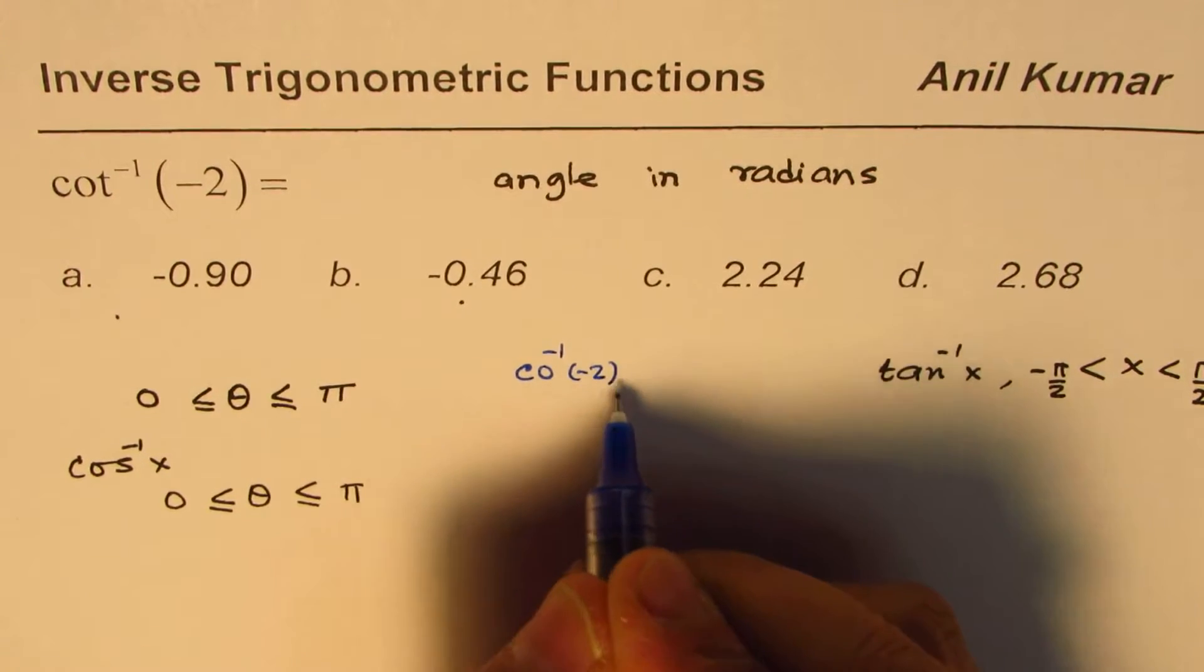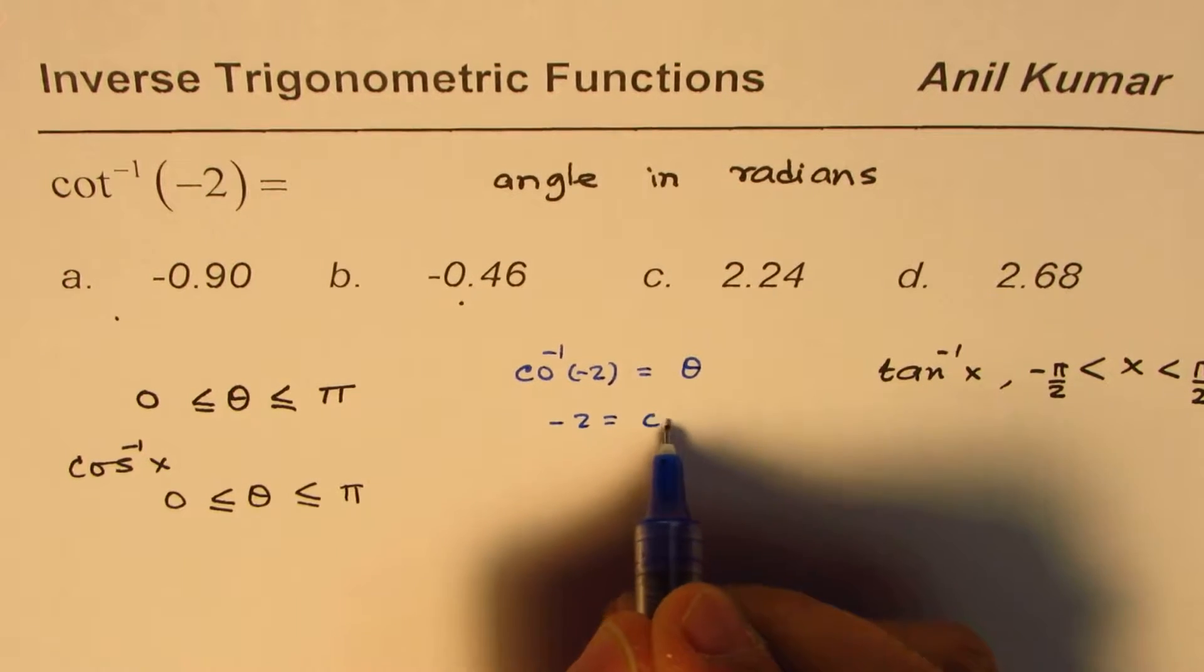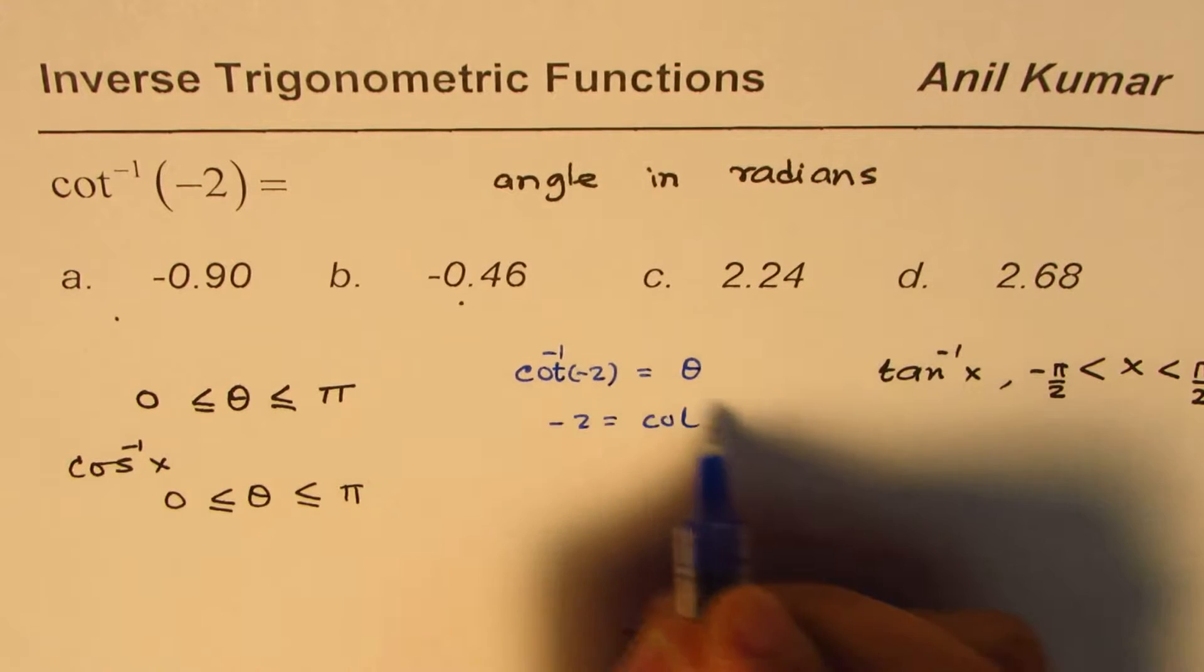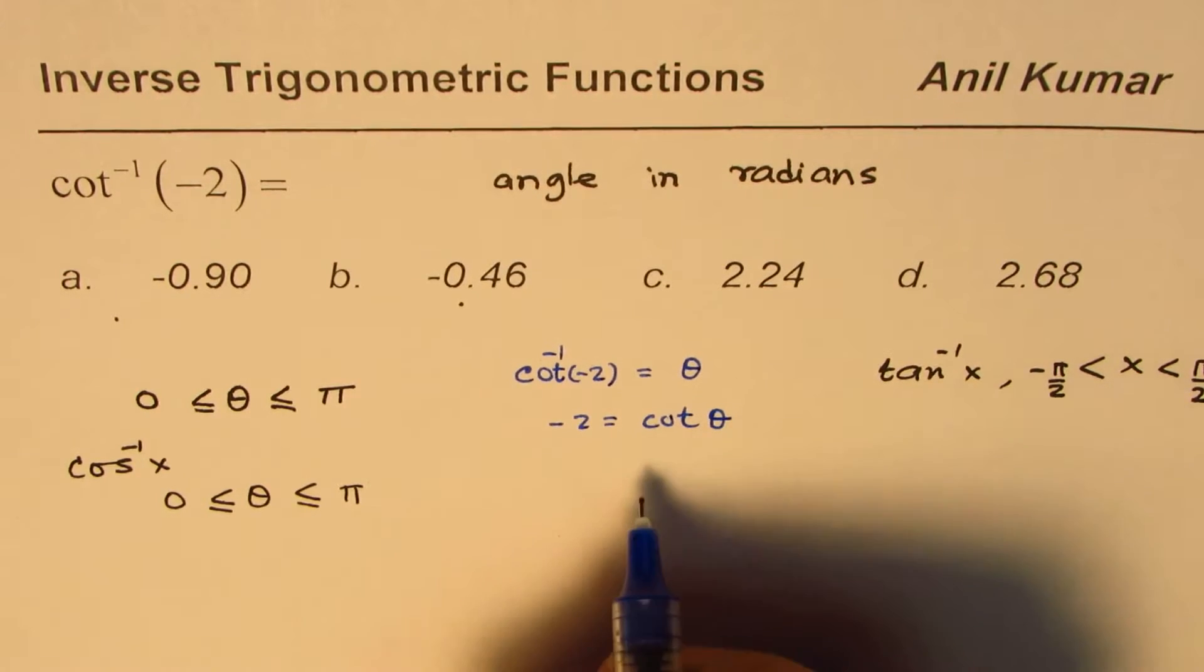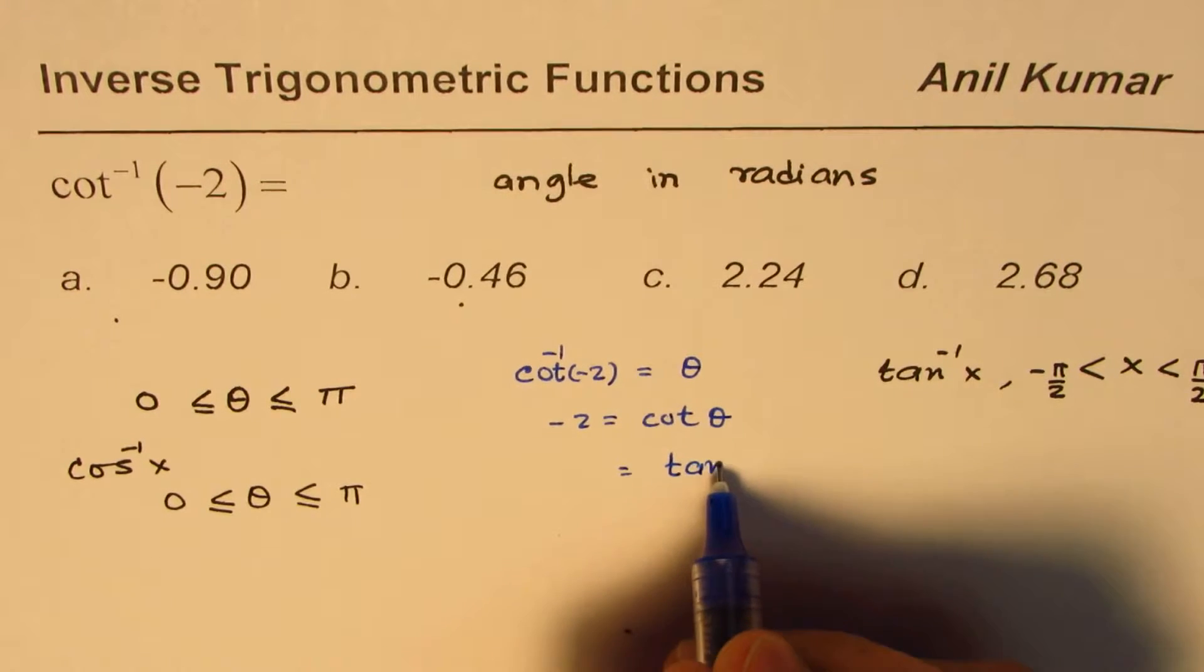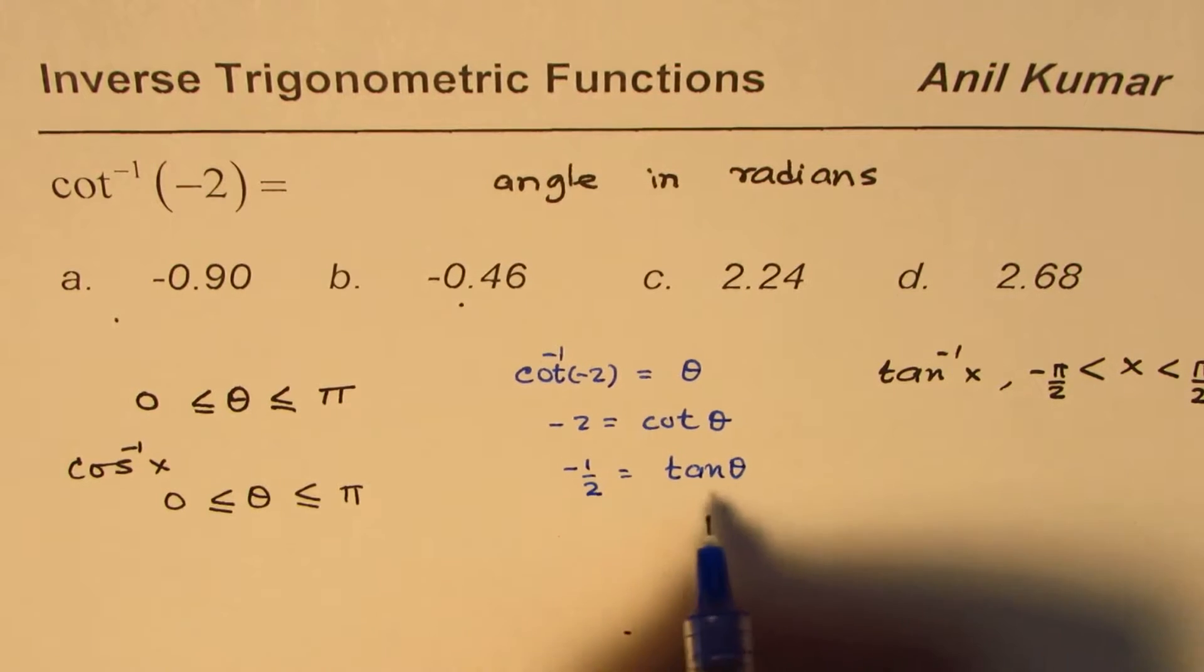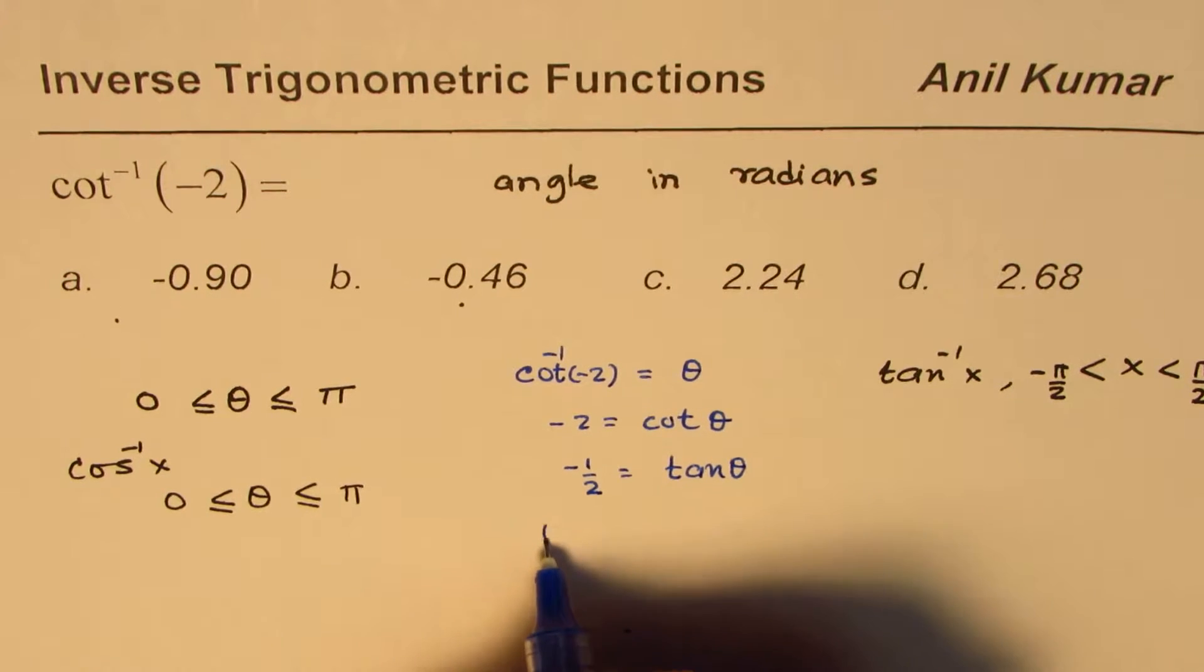So when we say cot inverse of minus 2, we know it is some angle theta. So we can say minus 2 is cot theta, right? Now so we can say tan theta will be minus half.